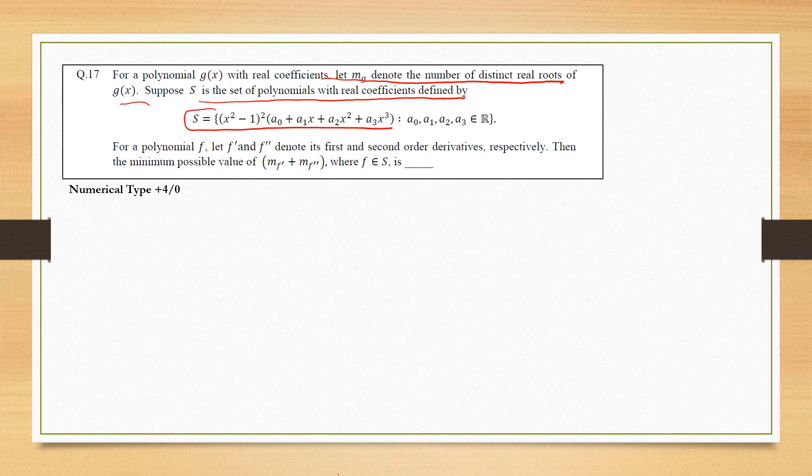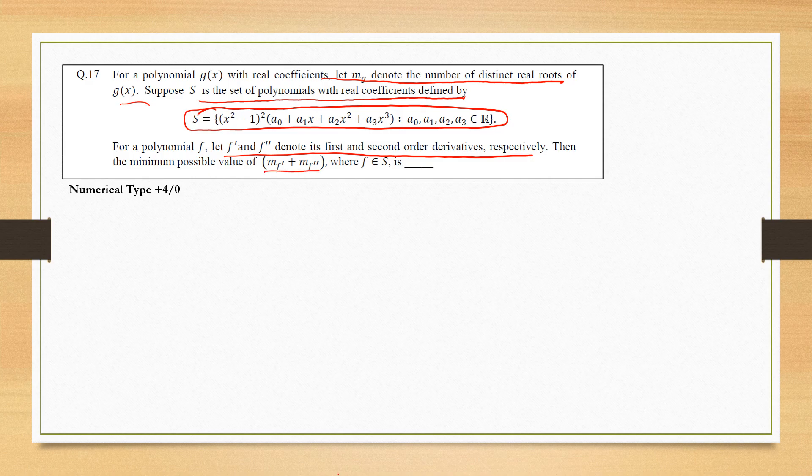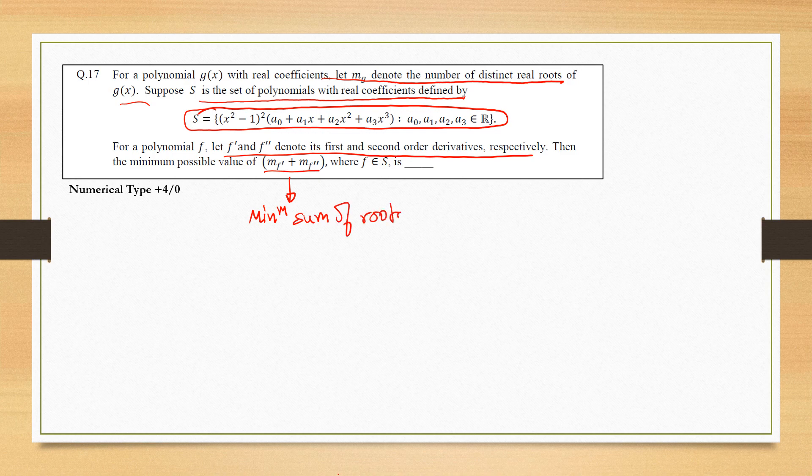For a polynomial f, let f' and f'' denote first and second derivatives respectively. Then the minimum possible value of m(f') + m(f''), basically the minimum sum of roots of f'(x) and f''(x).